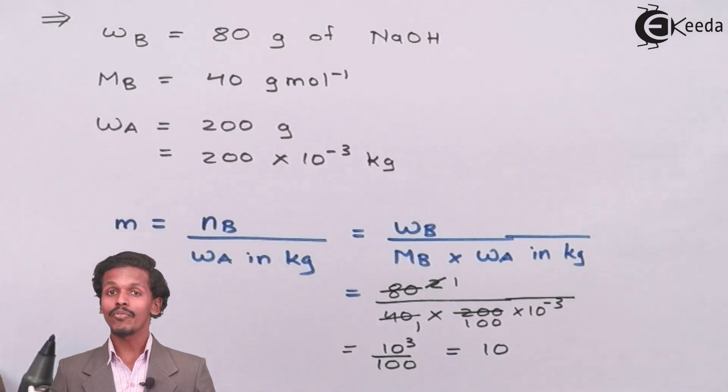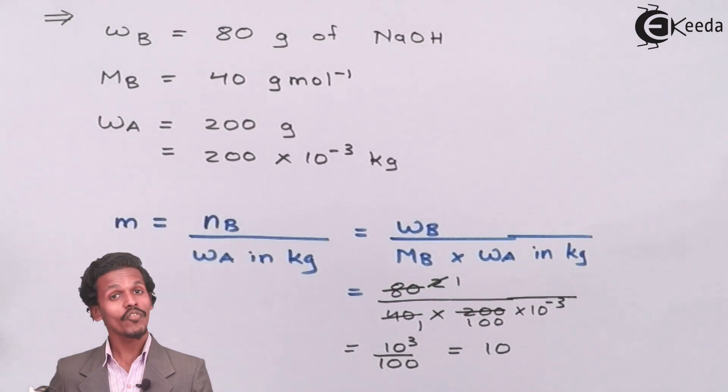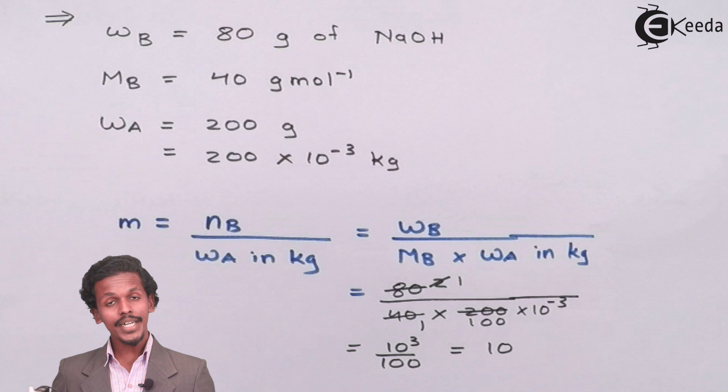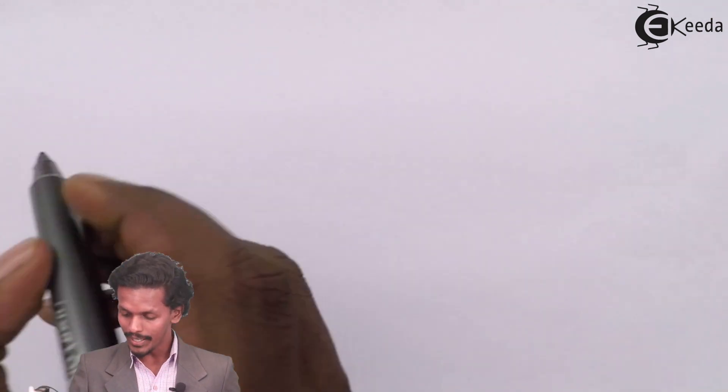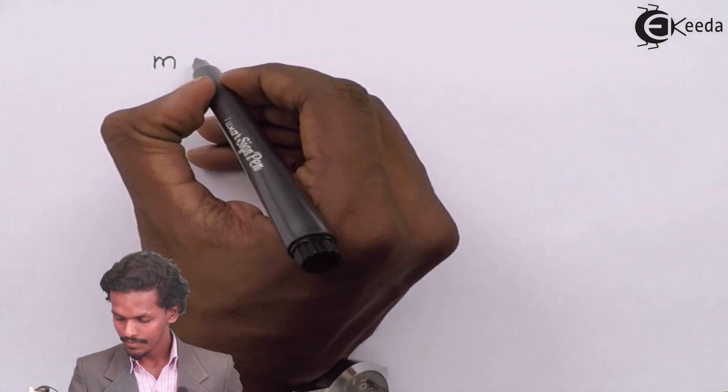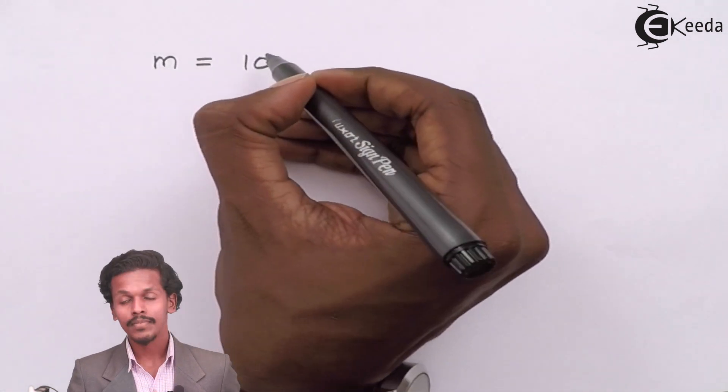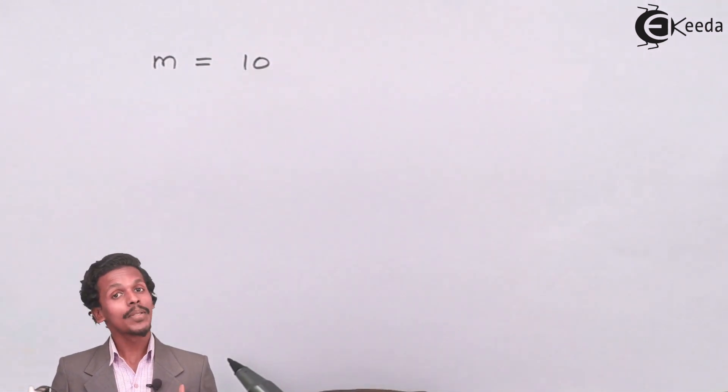Now we have to write the unit also. So what will be the unit? The unit of molality will be moles per kg.